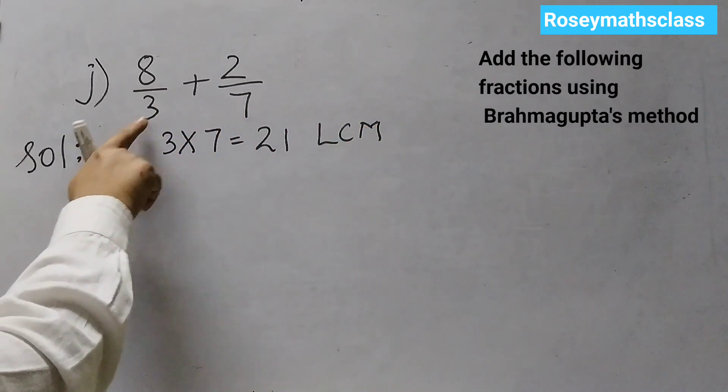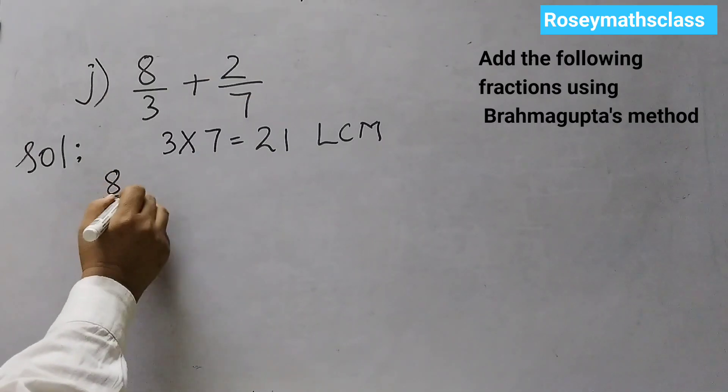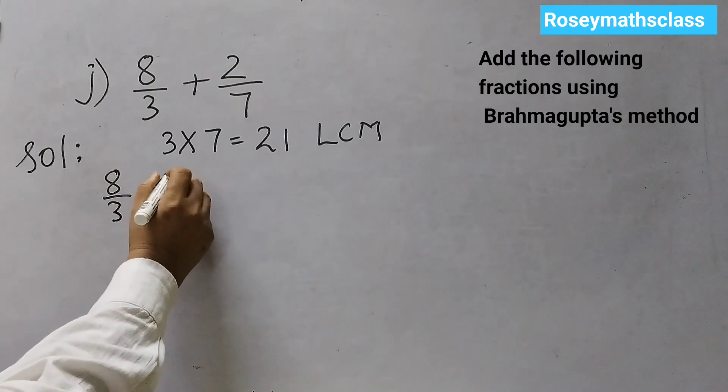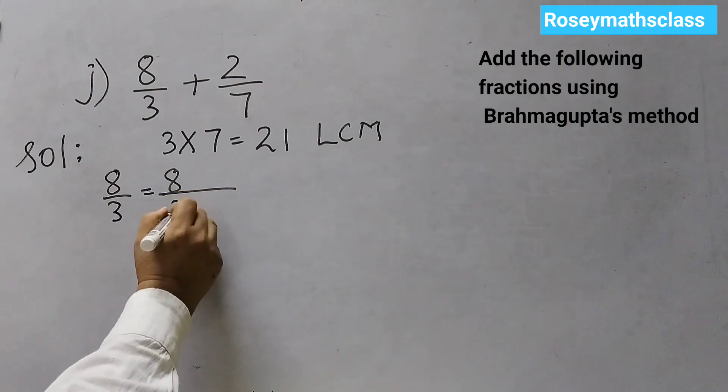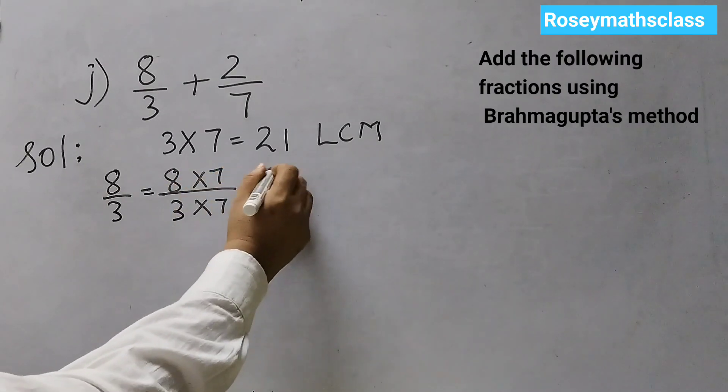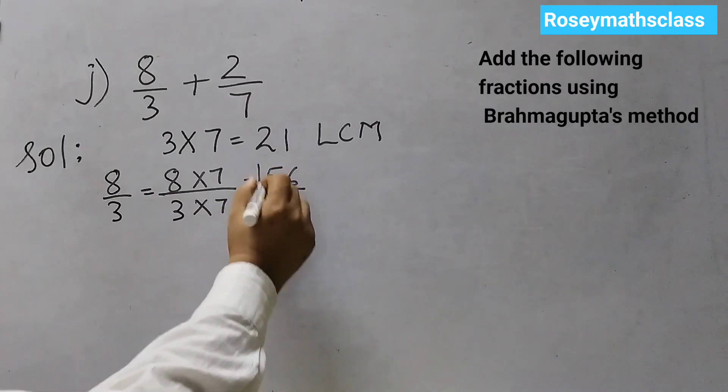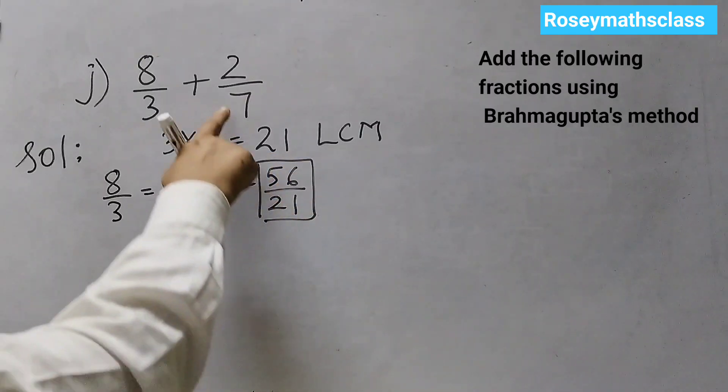Now, we need to change 3 and 7 to 21. So, for that 8 by 3 is equal to multiply both numerator and denominator by 7. 8 sevens are 56, 3 sevens are 21. So, this is one fraction we got.